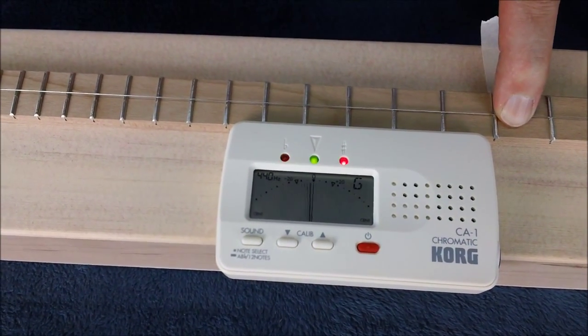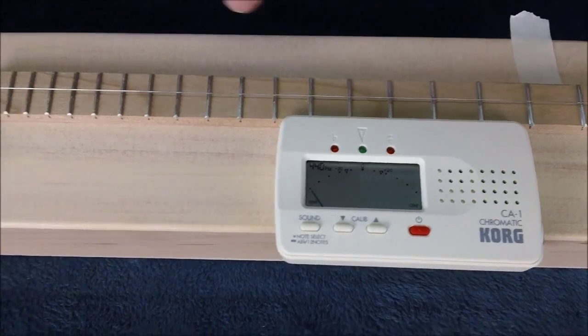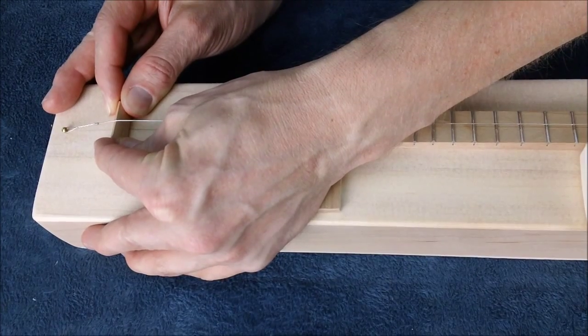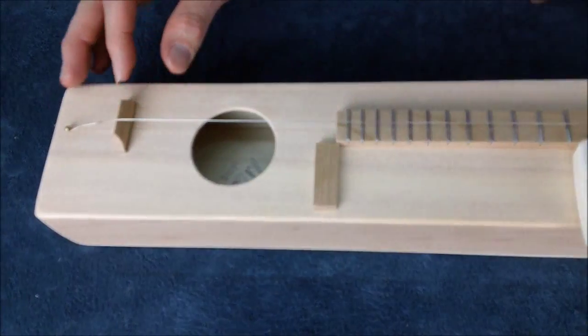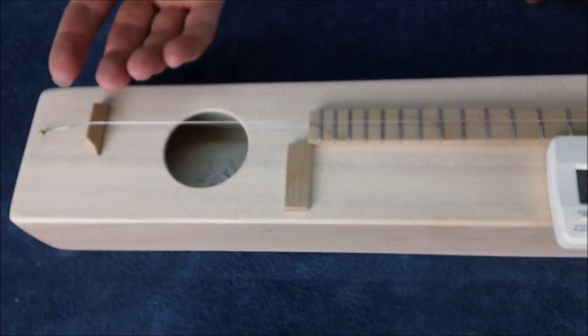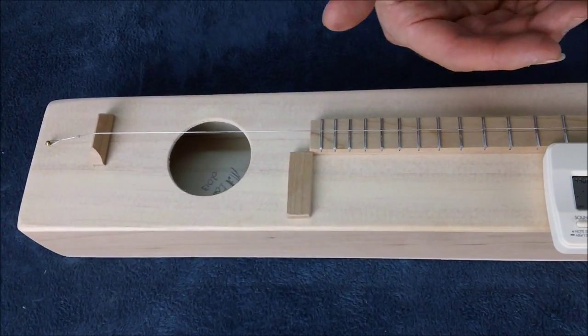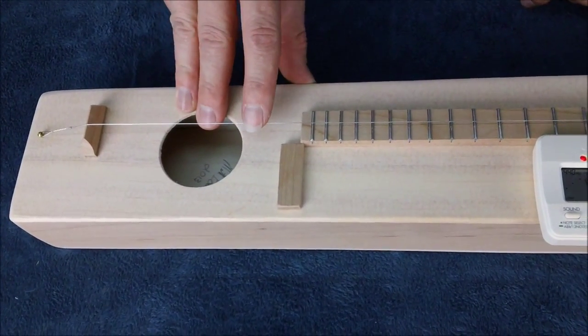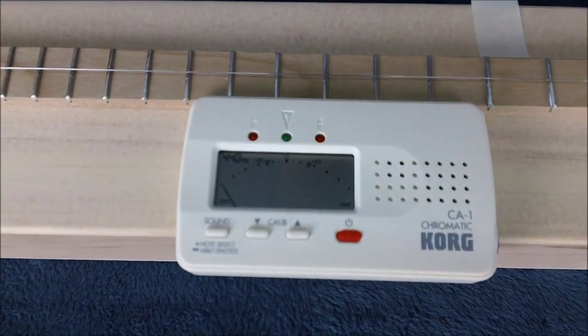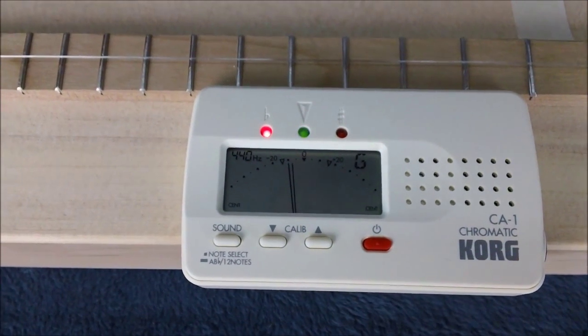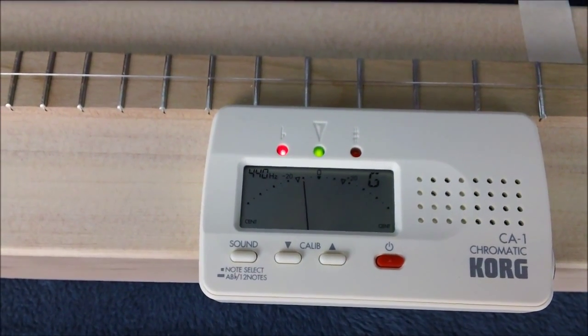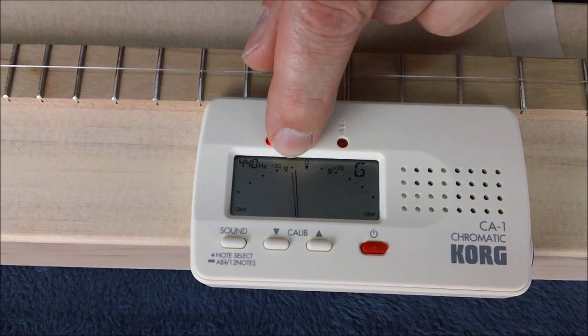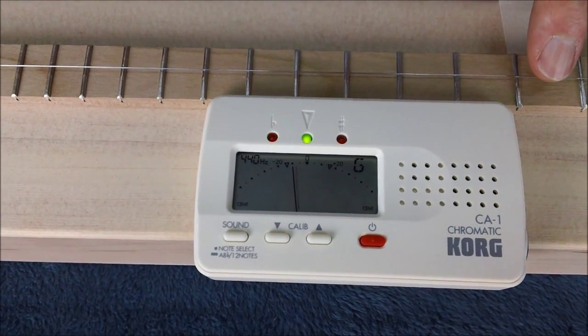So that means that this note is too sharp. And so what we need to do is, if you look over at the bridge here, we're going to scoot the bridge back just a little bit. If the second or fretted note is too sharp, you're going to scoot the bridge back. Conversely, if the fretted note is too flat, you're going to scoot the bridge forward. So let's see if I've made the correct adjustment. We'll come back to the tuner now.